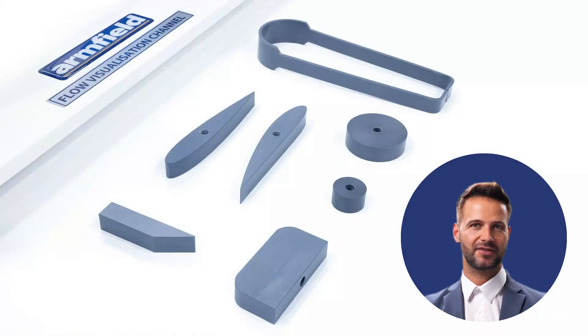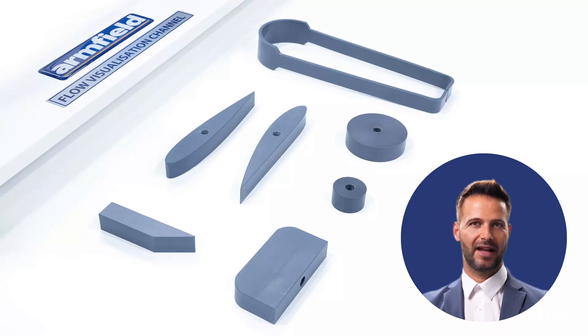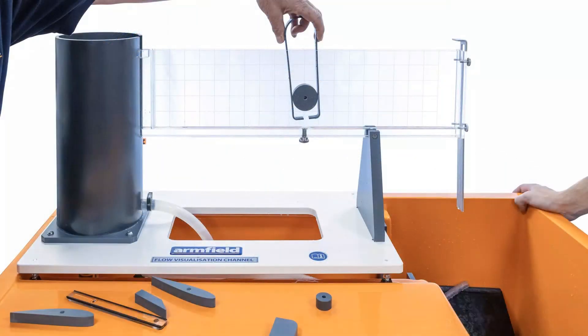The system includes various models such as broad and sharp-crested weirs, cylinders of different diameters, and aerofoils for a wide range of demonstrations. These are inserted into the working section with tongs provided. These, in conjunction with the inlet and discharge weirs, permit a varied range of open channel and flow visualization demonstrations.